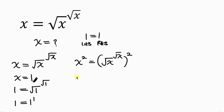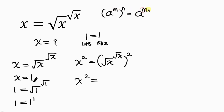This becomes x squared equals... Now I'm going to apply the law of indices, which says when I have a to the power of m raised to the power of n, this becomes a to the power of m times n — the powers multiply. Furthermore, this expression can also be written as a to the n raised to the m, meaning we can switch positions.